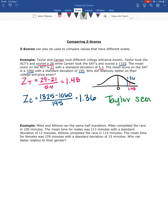So Taylor scored relatively higher on her entrance exam, meaning Taylor could possibly get into a better school than Carson because she has a higher score.